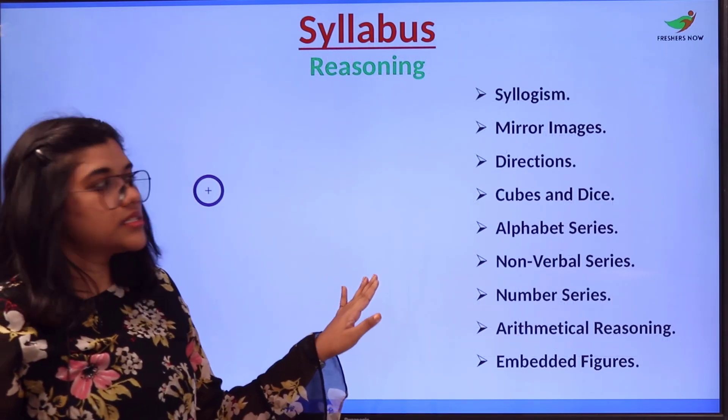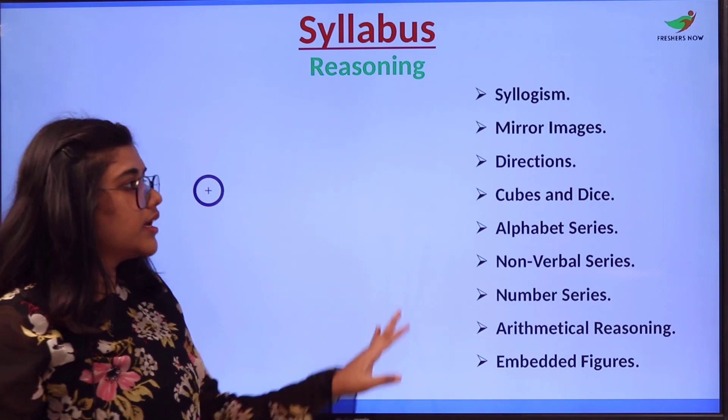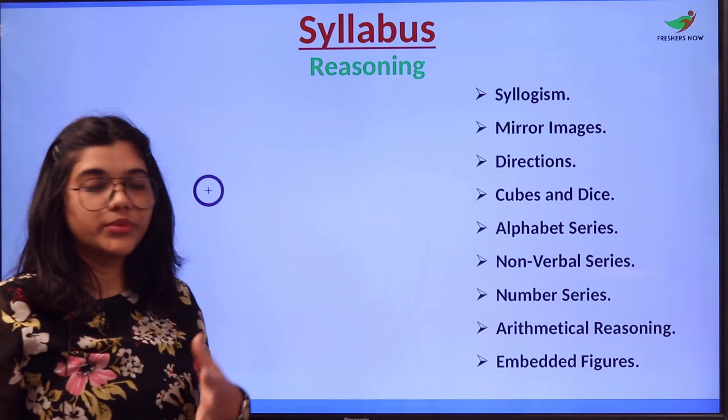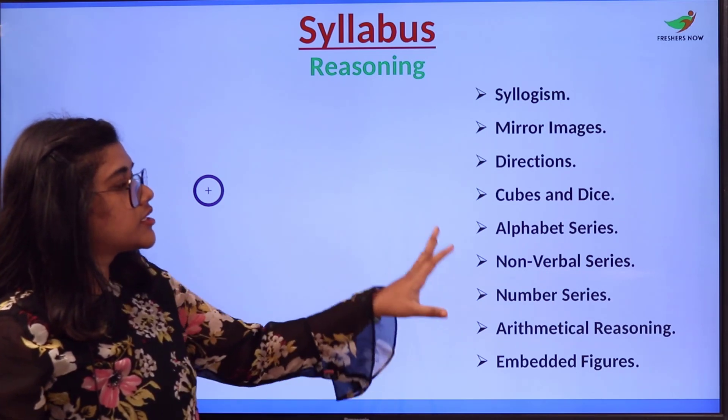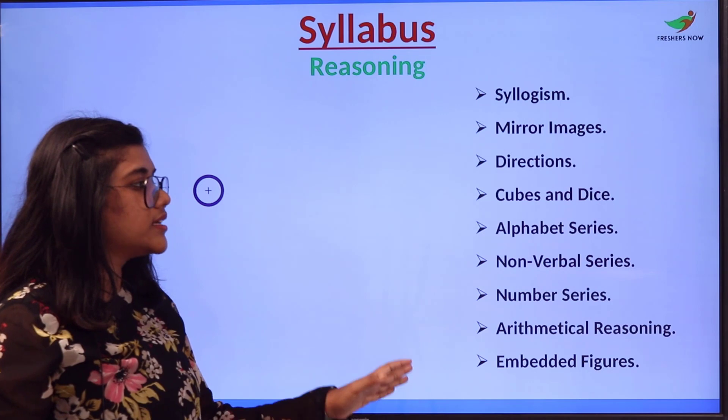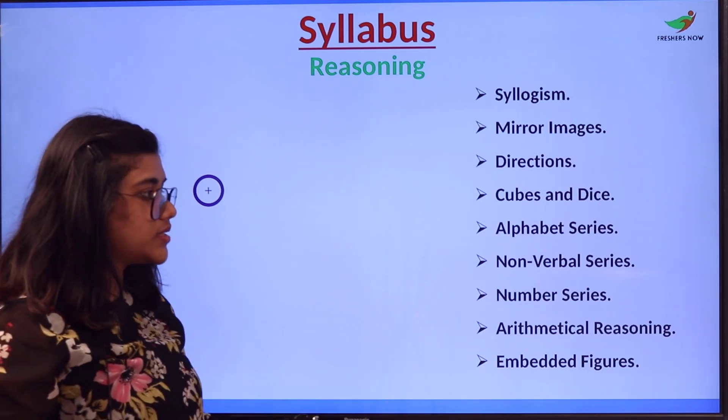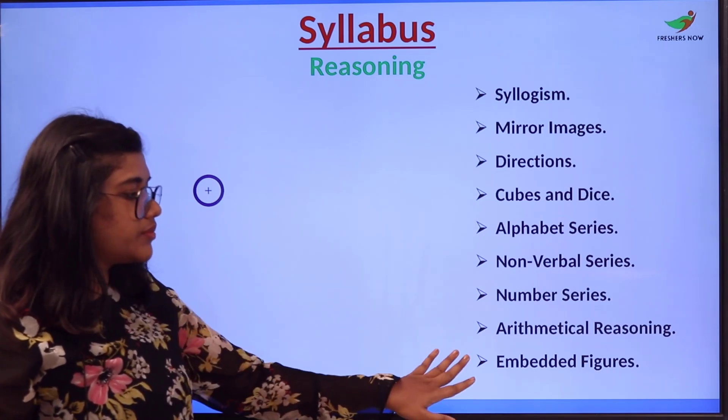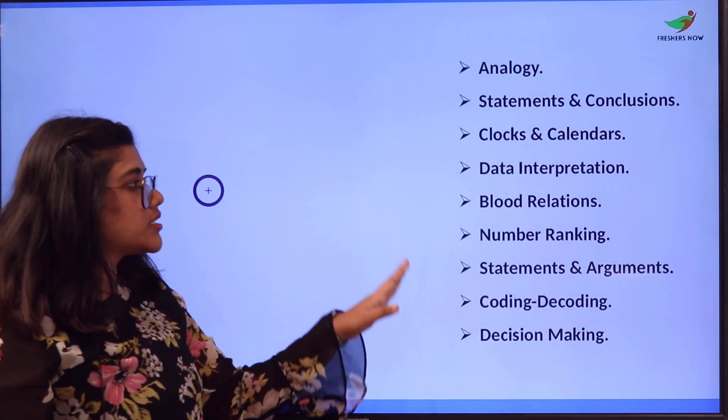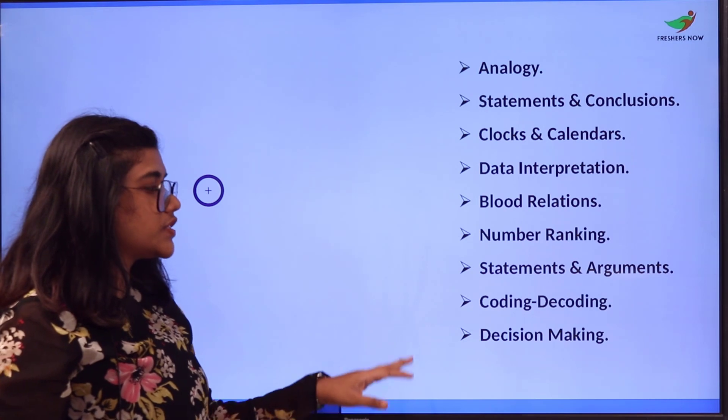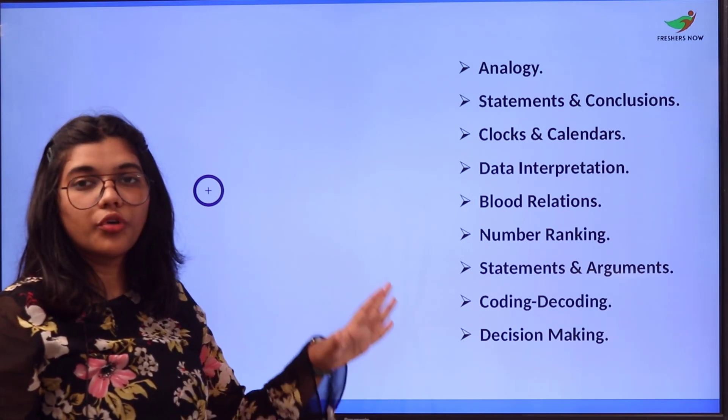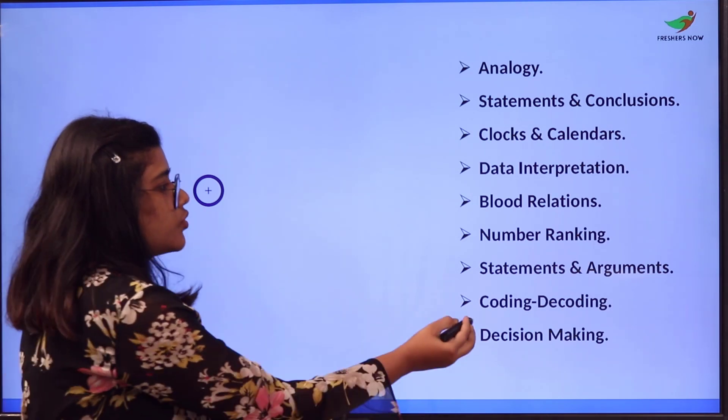For the syllabus for the reasoning section, these are the list of topics or concepts that you have to cover for your preparation: syllogism, mirror images, directions, cubes and dice, alphabet series, non-verbal series, number series, arithmetical reasoning, embedded figures, analogy, statements and conclusions, data interpretation, blood relations, number ranking, statements and arguments, coding-decoding, and decision making. All of these come under reasoning section only.